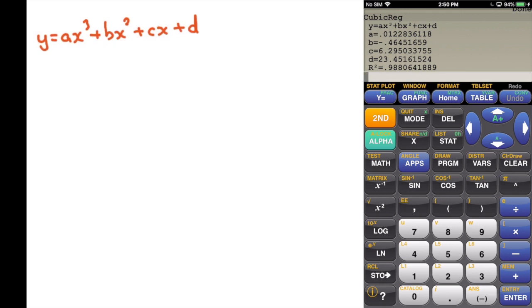Filling in specifics, y equals 0.012x cubed minus 0.46x squared plus 6.3x plus 23.4.